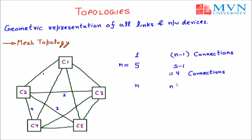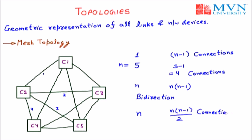If we have n number of computers, the maximum possible connections is n × (n−1). If all the wires are bidirectional, the connection would be n × (n−1) / 2. So whenever we have n number of computers, we have n × (n−1) / 2 connections. Here n is five, so the maximum possible connections = 5 × (5−1) / 2 = 5 × 4 / 2 = 10 connections.